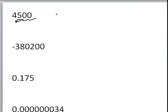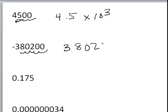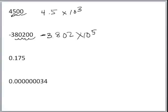Let's practice putting numbers into scientific notation. For 4,500, the decimal is behind the last zero, so we move it 3 places to the left — giving us 4.5 times 10 to the third. For the next example, the decimal moves 5 places to the left behind the 3, giving us 3.802 times 10 to the fifth. And don't forget it's a negative number — moving the decimal does not change the sign of a number.